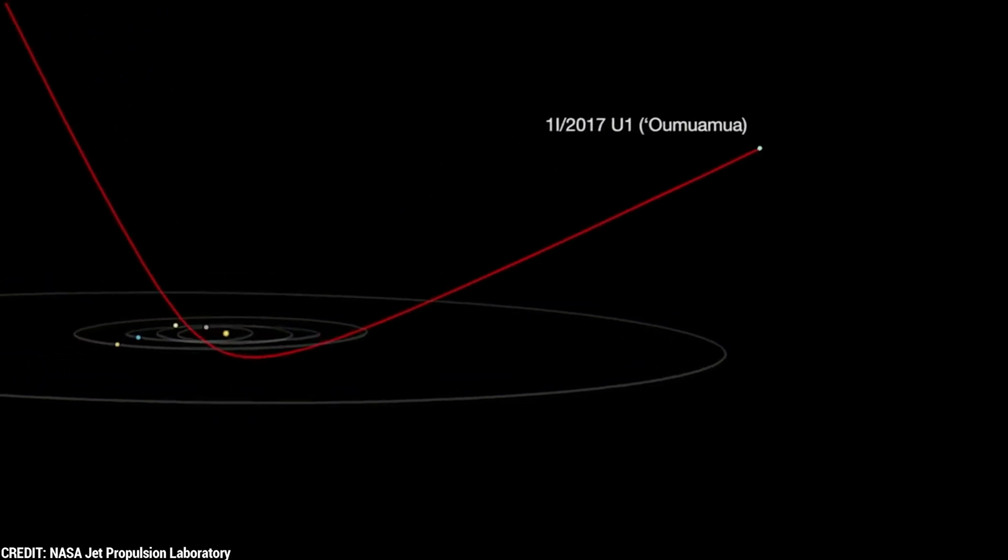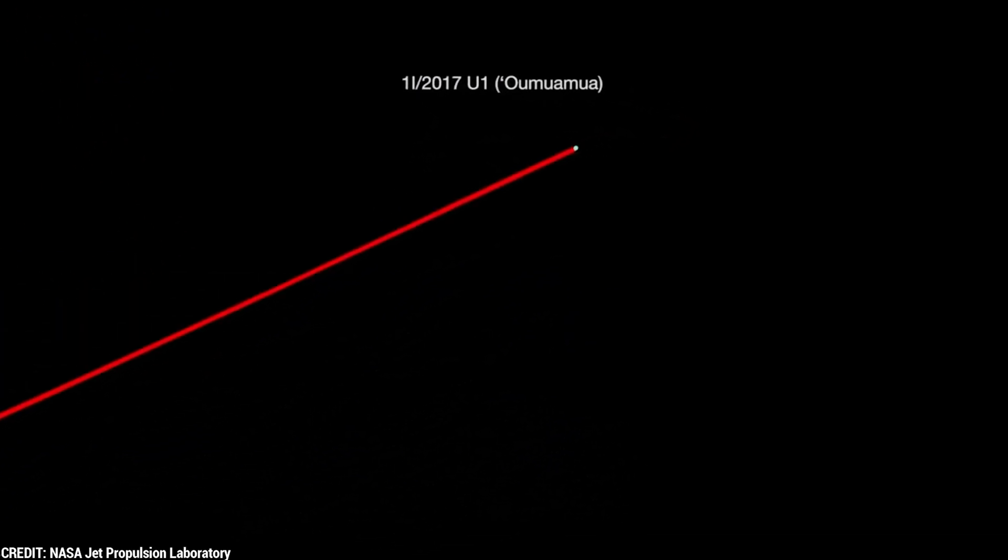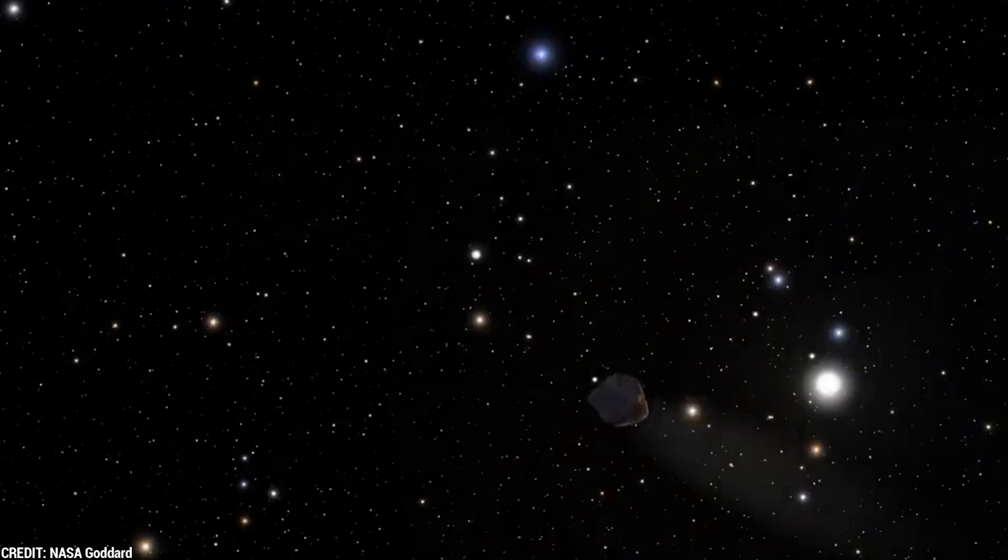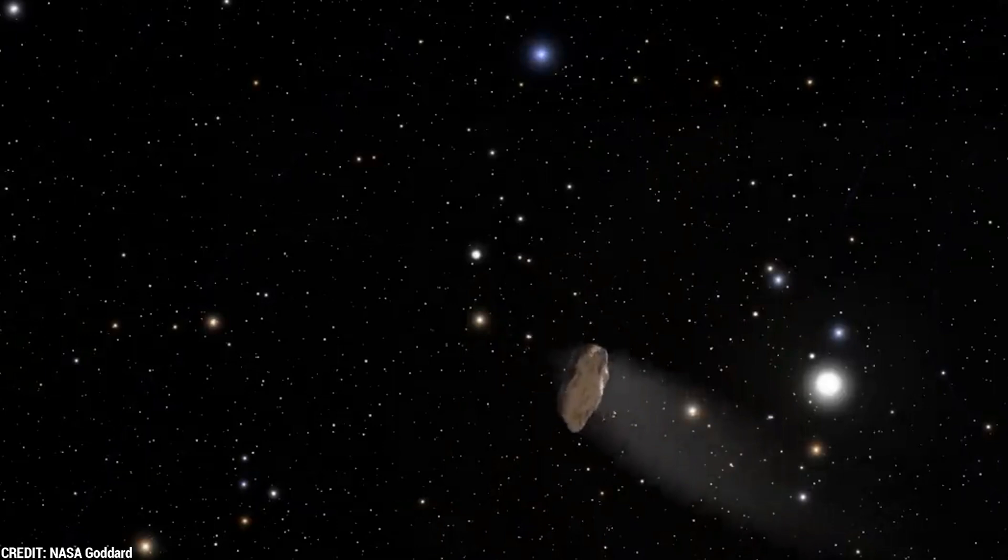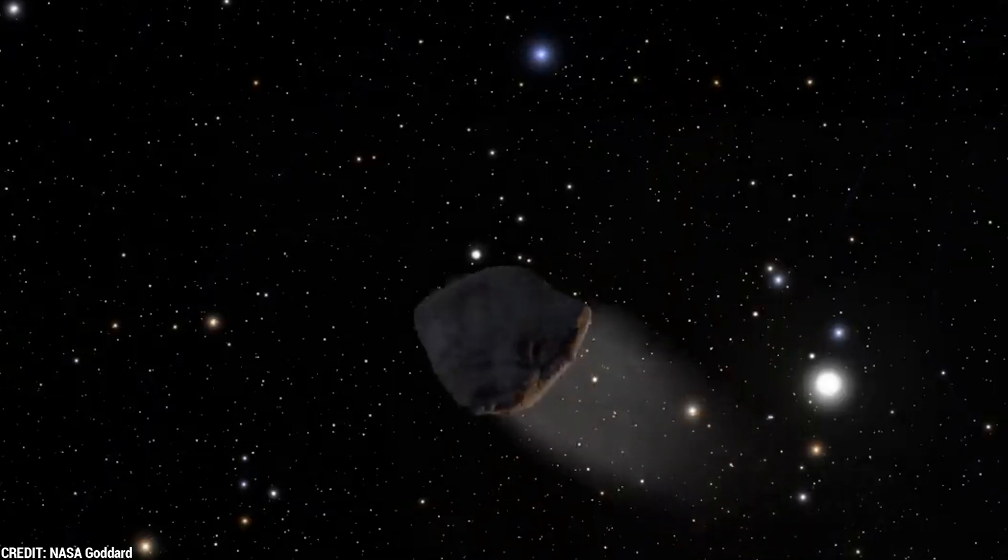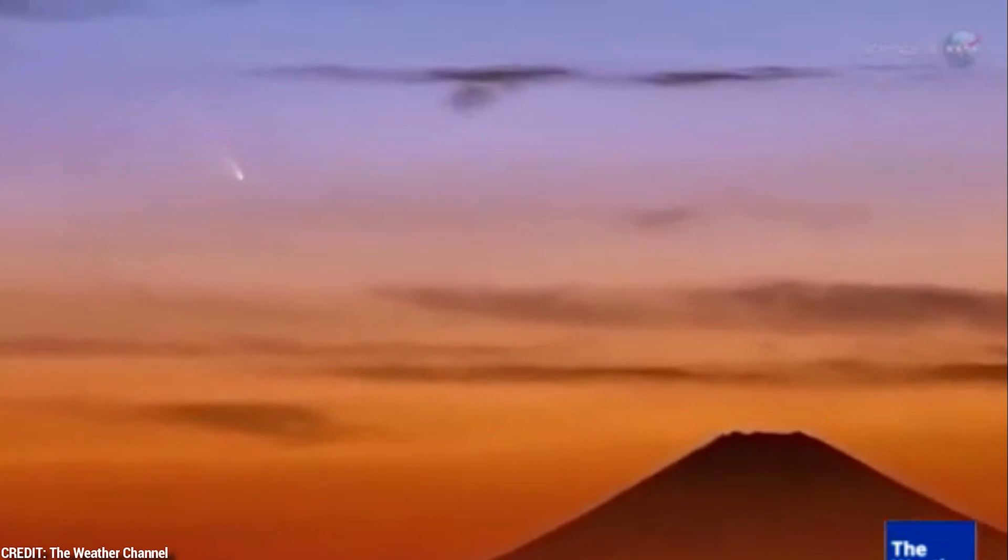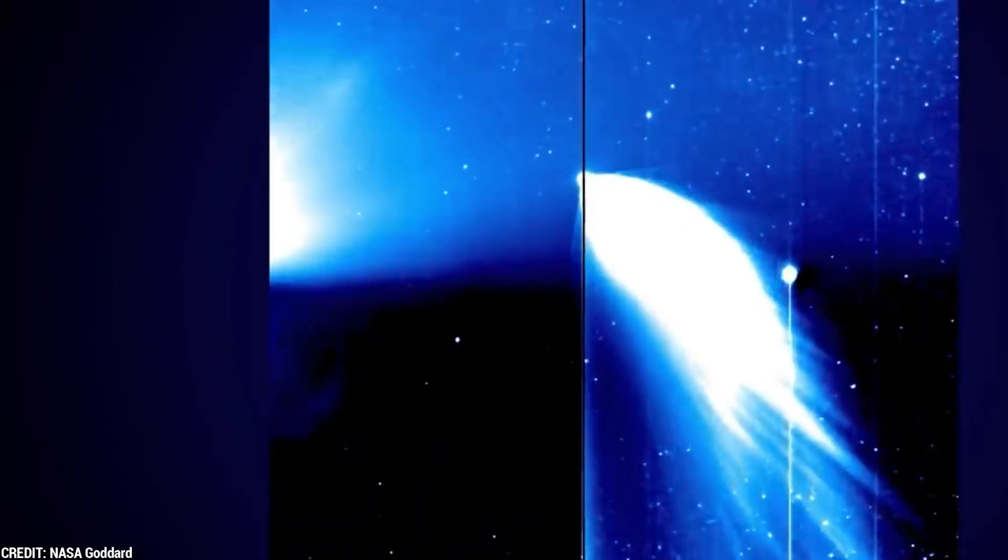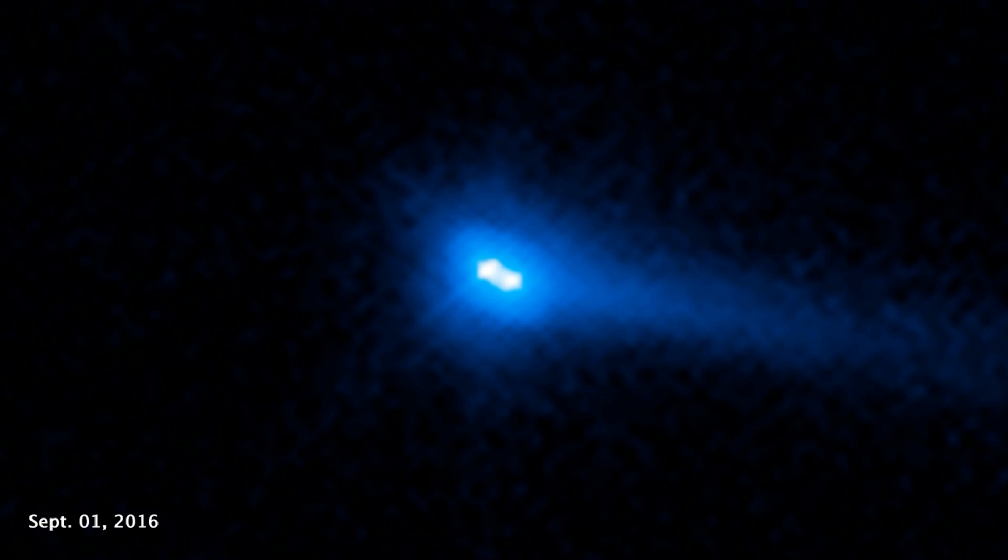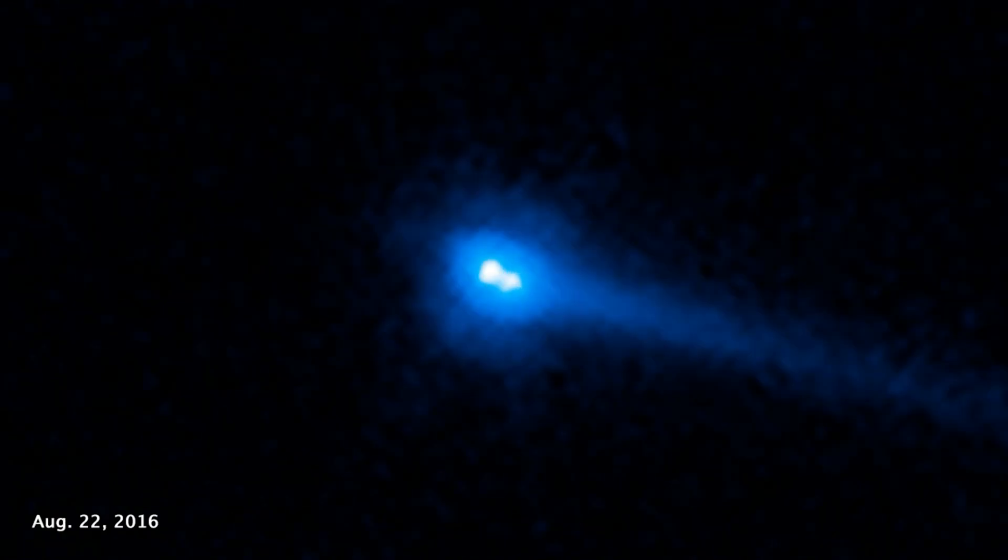Moreover, the expelled material slightly altered Oumuamua's trajectory, differentiating it from asteroids and planets. However, Oumuamua didn't resemble a typical comet, as it lacked a tail or the gas and dust envelope known as a coma. Consequently, its arrival sparked controversy among astronomers, intensifying scientific curiosity as various models emerged to explain its impressive acceleration. These models hinted at potentially extraordinary chemical properties of the object.